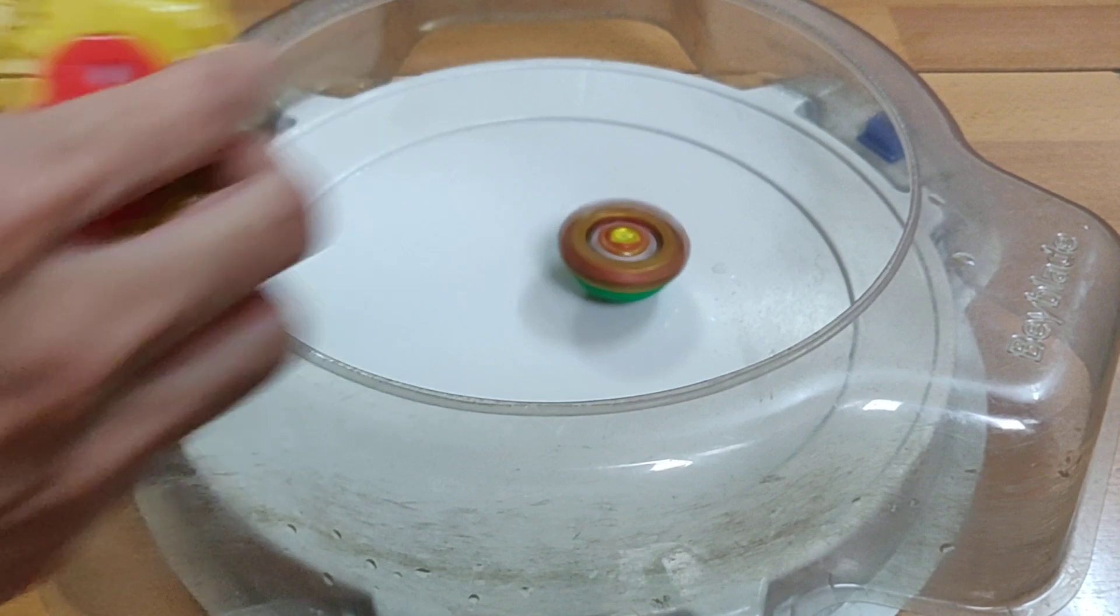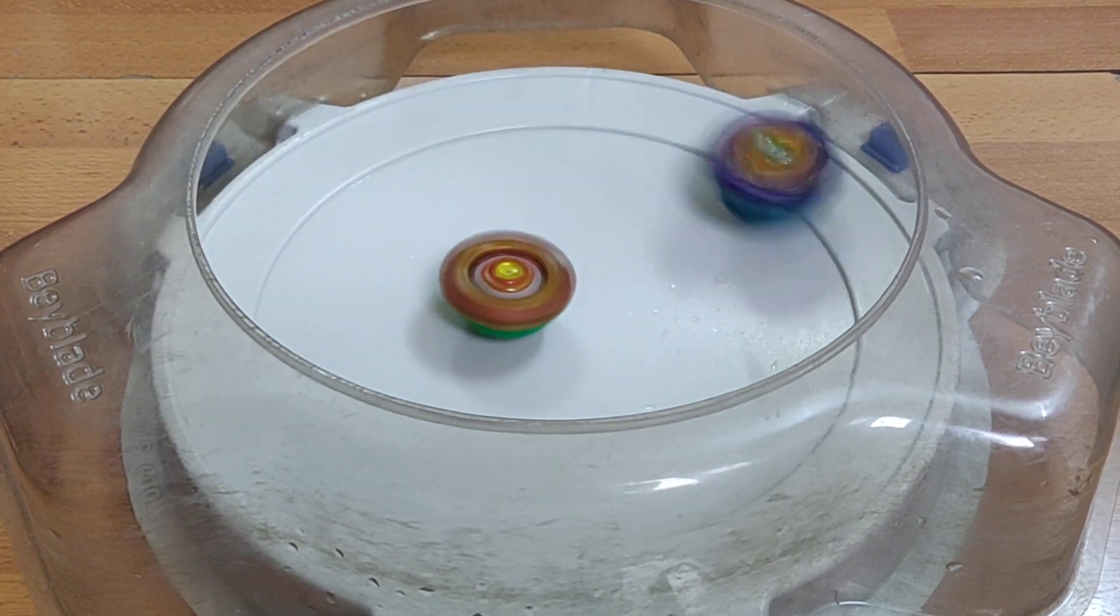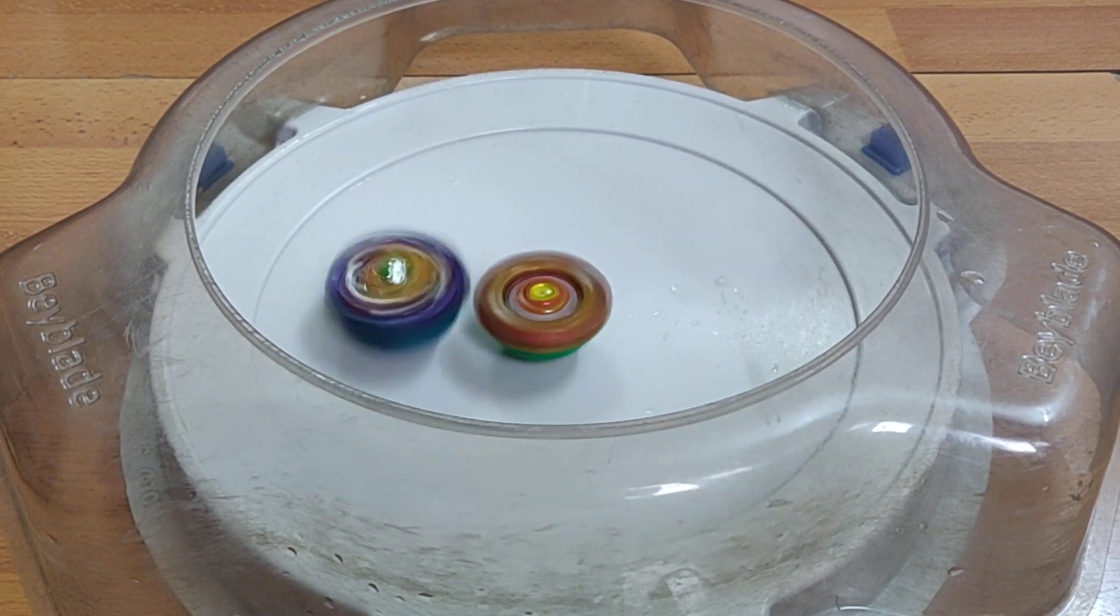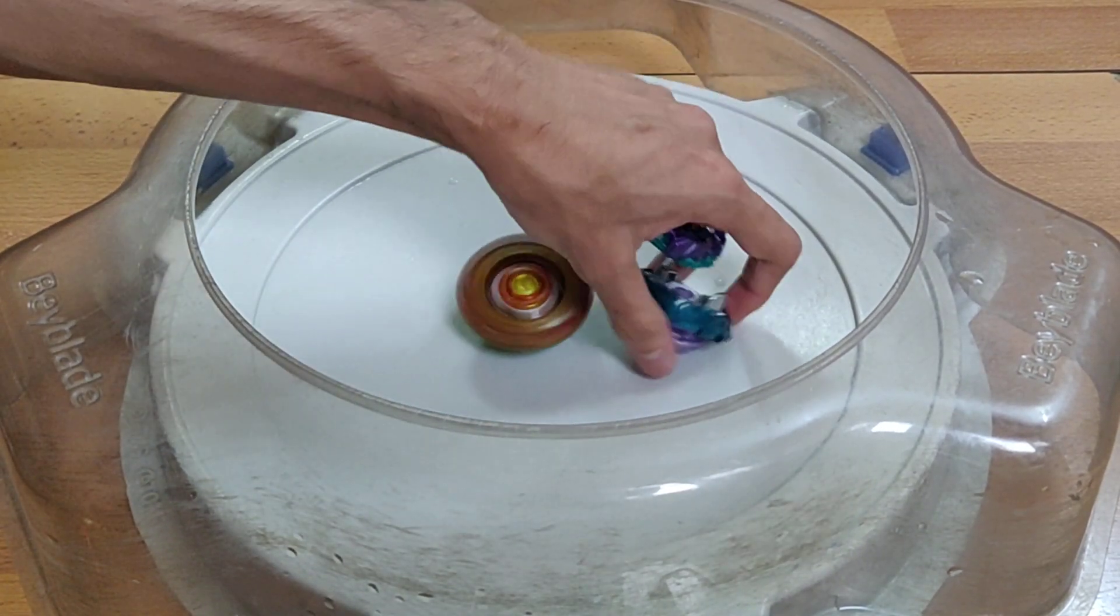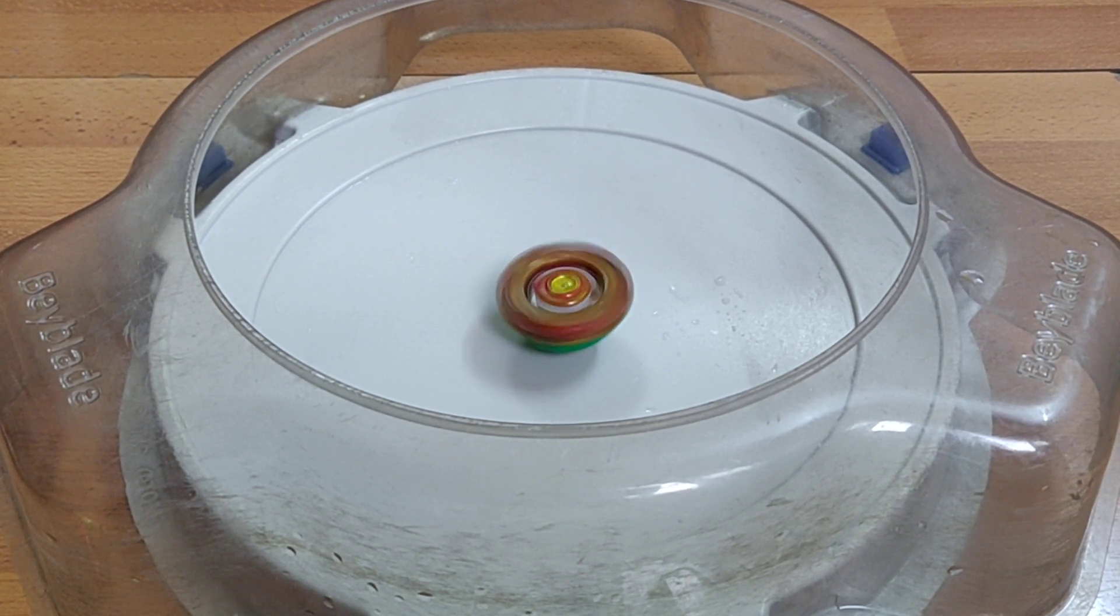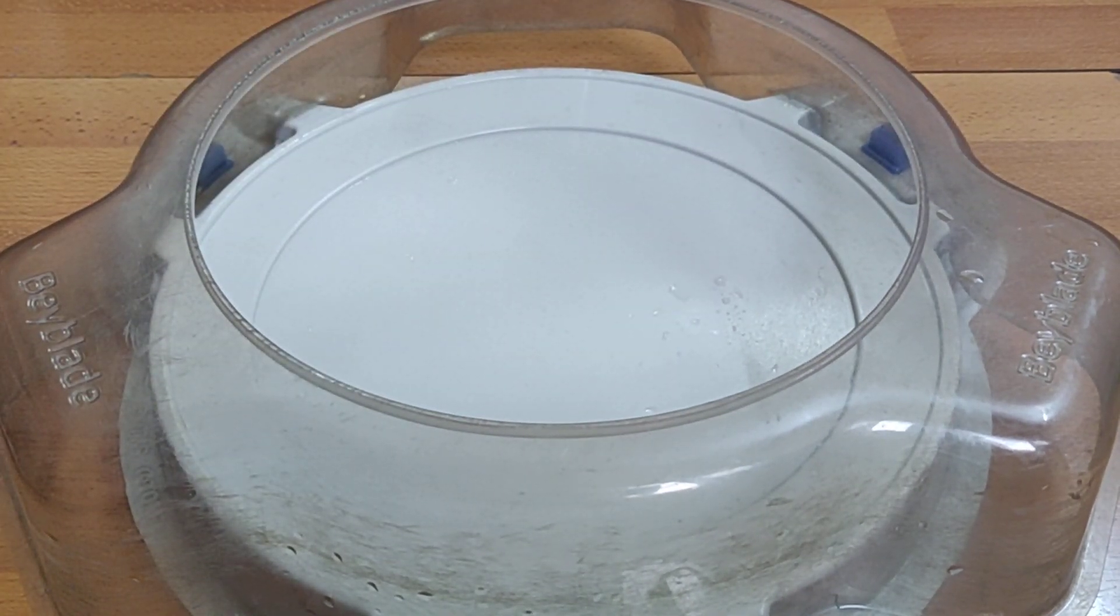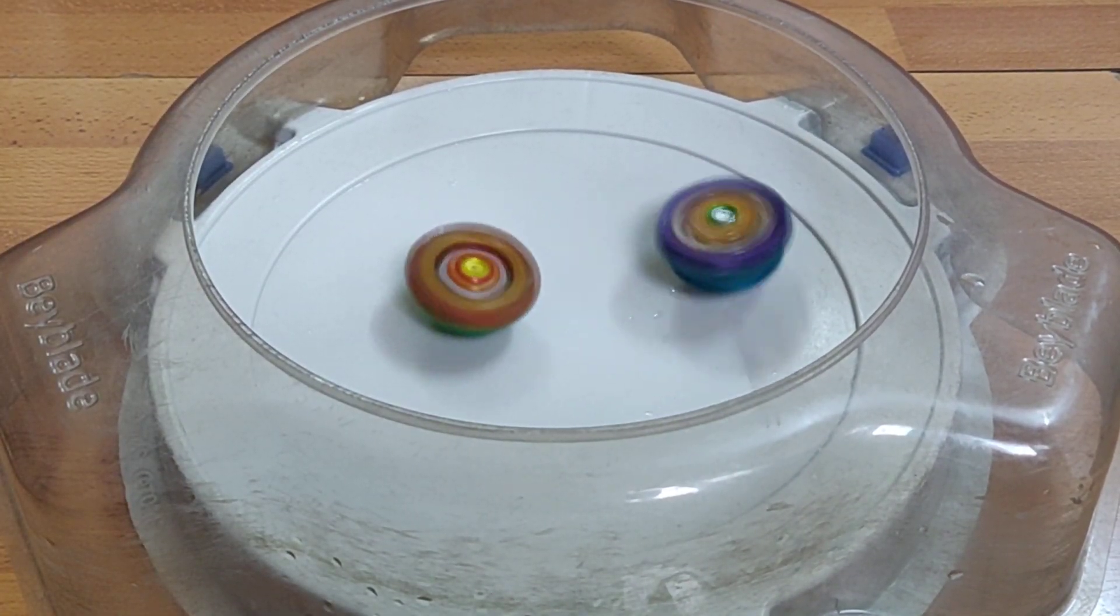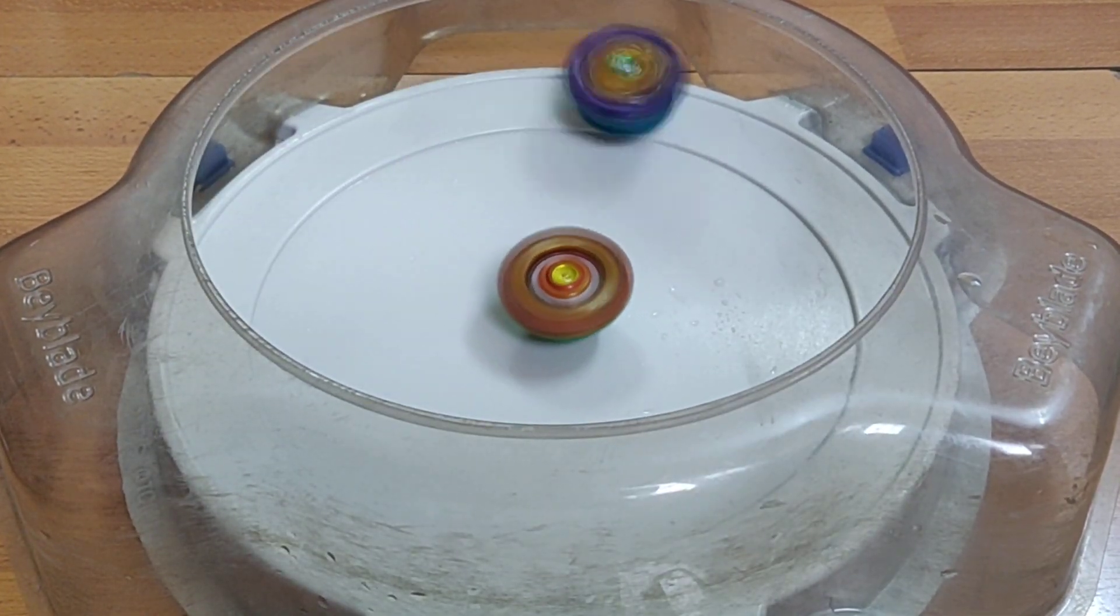That's one to two for Chozu Spriggan. I believe Arc Bahamut was really more competitive in comparison to Dread Bahamut. Dread Bahamut is a lot shallower in comparison to Arc Bahamut. Let's start the second round. Three, two, one, go shoot! It's going into attack mode. That's the second burst finish.